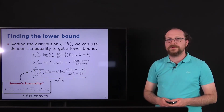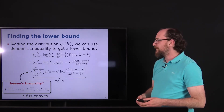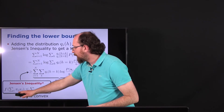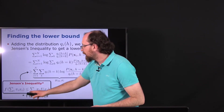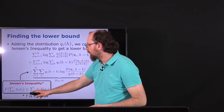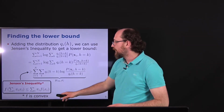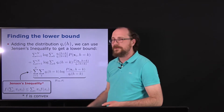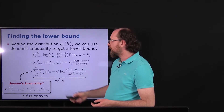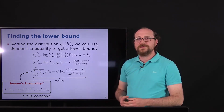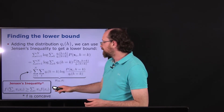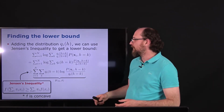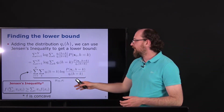Jensen's inequality states: for a convex function f, the sum over a distribution times x is always less than or equal to the sum over the distribution times f(x) — we move f inside. Because the logarithm is a concave function, we flip the inequality. Moving the logarithm inside, we now have the log in front of the fraction inside the sum. With the log inside, we can do further derivations.